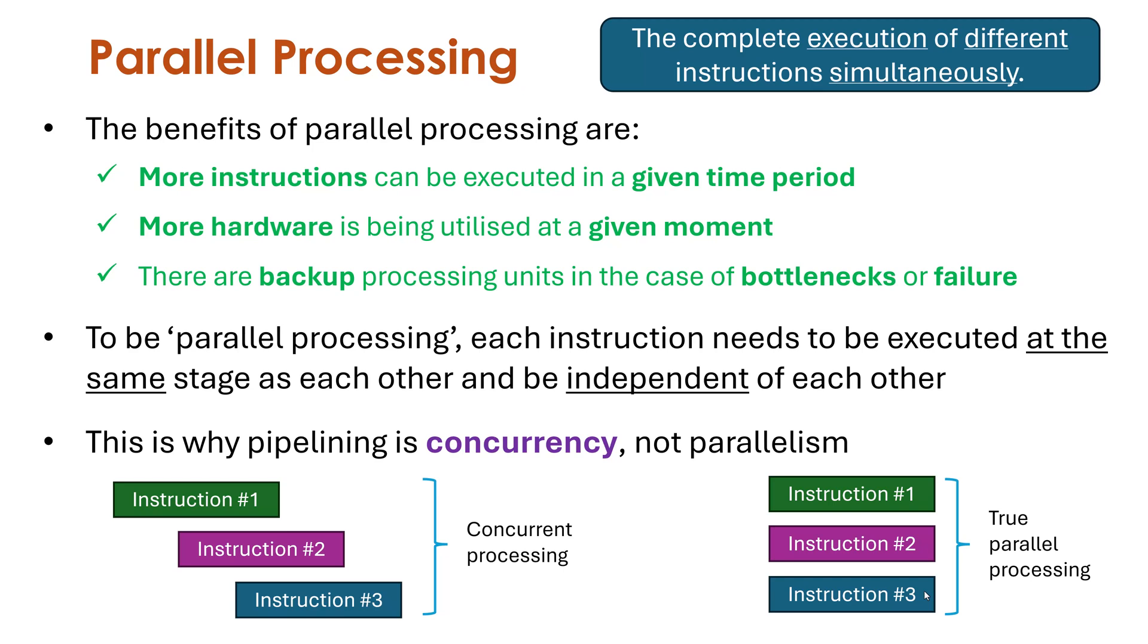Now this is confusing. I can remember being at university being quite worried about getting this wrong in an exam. The honest answer is that's rarely an issue because people try and avoid it in computer science because it is confusing. Essentially don't give pipelining as an example of parallel processing.